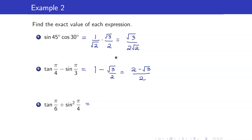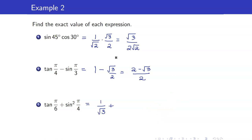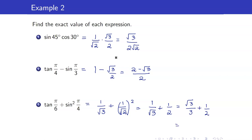Next, tangent of pi over 6. Pi over 6 is 30 degrees, so opposite over adjacent gives 1 over square root of 3. Plus sine squared of pi over 4: sine of pi over 4 is 1 over square root of 2, and squaring gives 1 half. So we have 1 over square root of 3 plus 1 half. Rationalizing 1 over square root of 3 gives square root of 3 over 3. Combining over a common denominator gives 2 square root of 3 plus 3, all over 6.